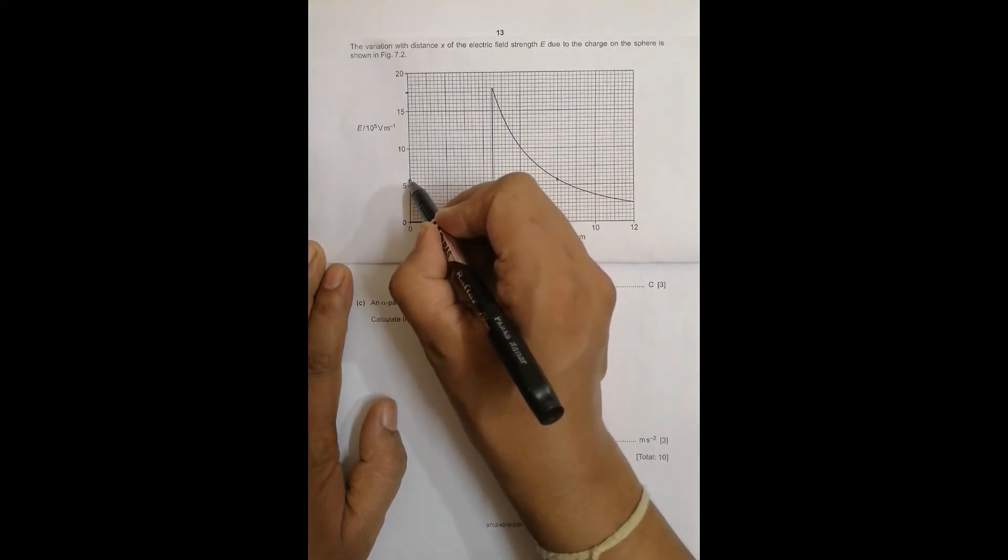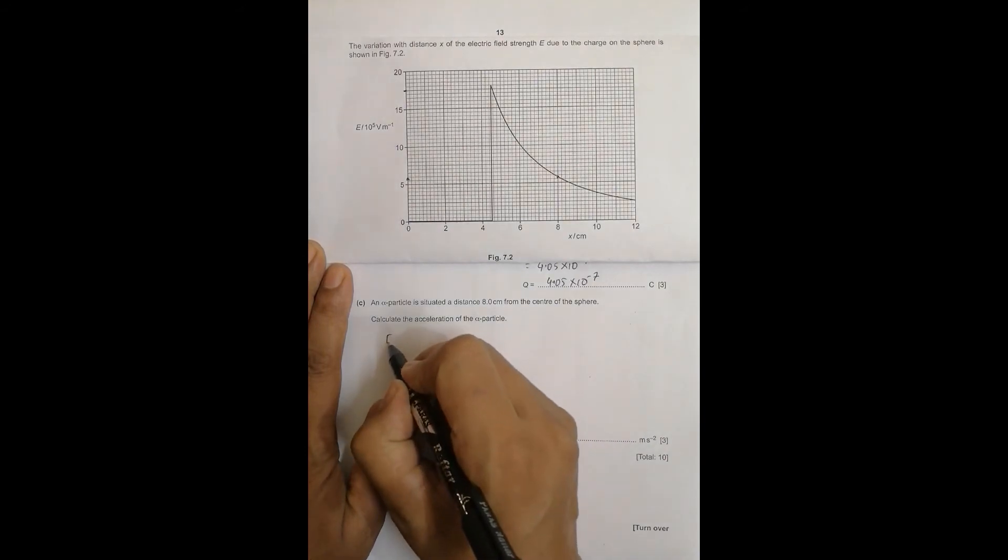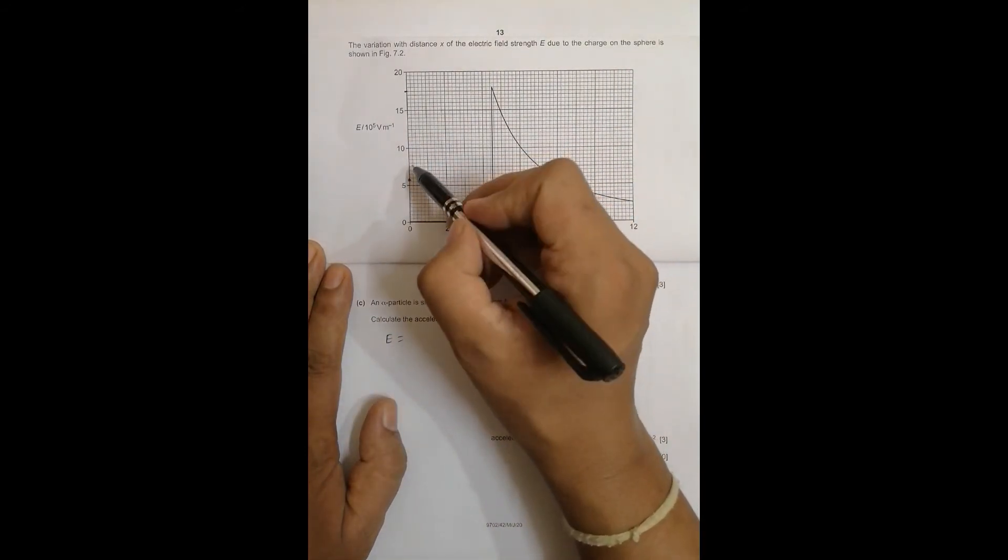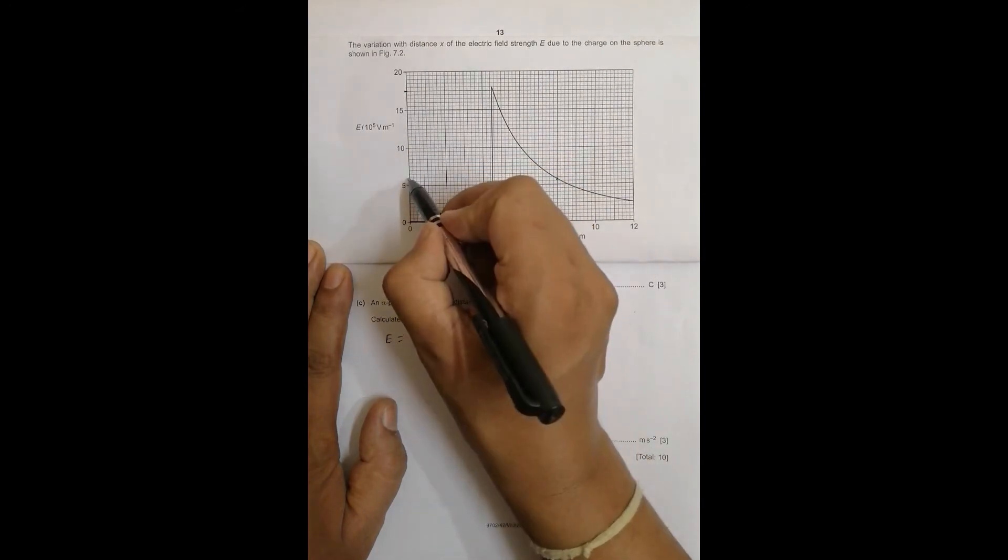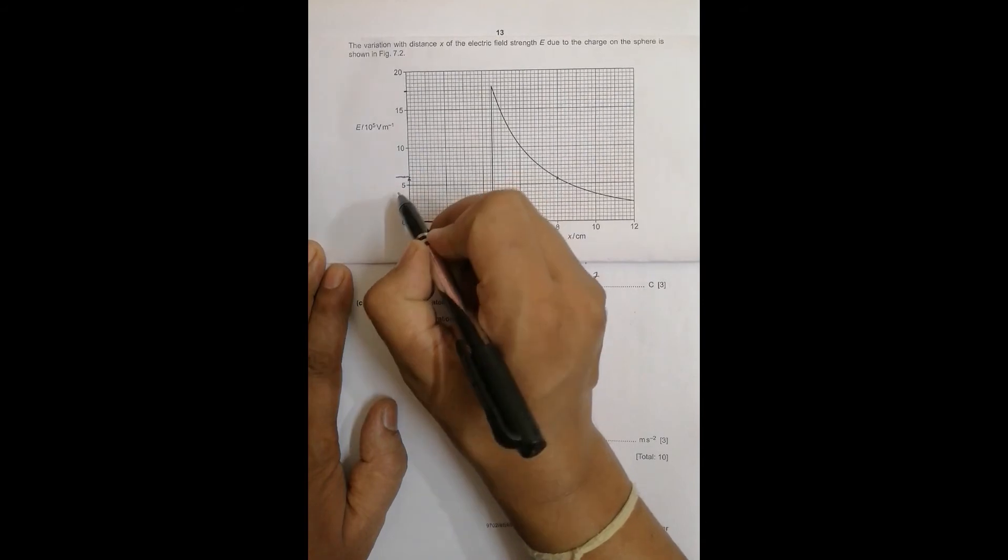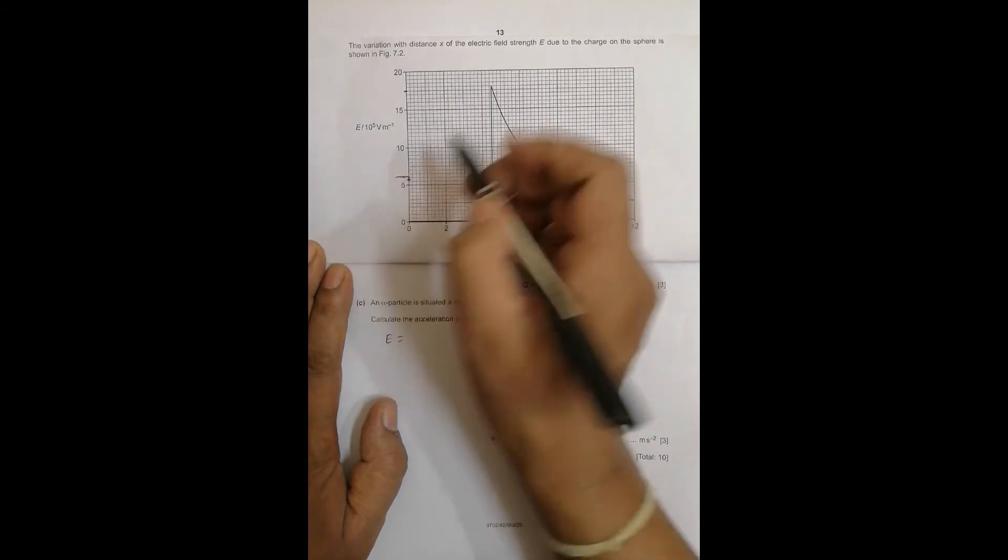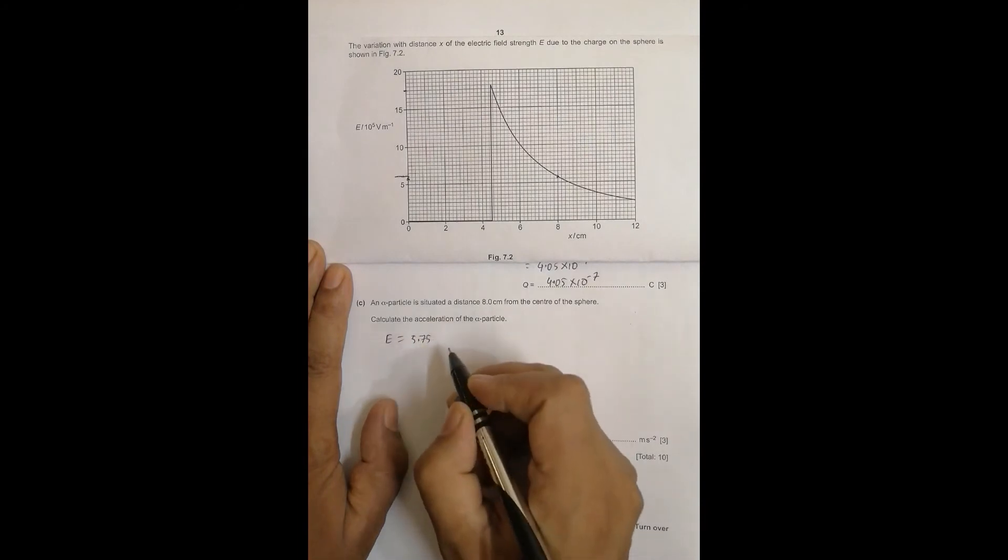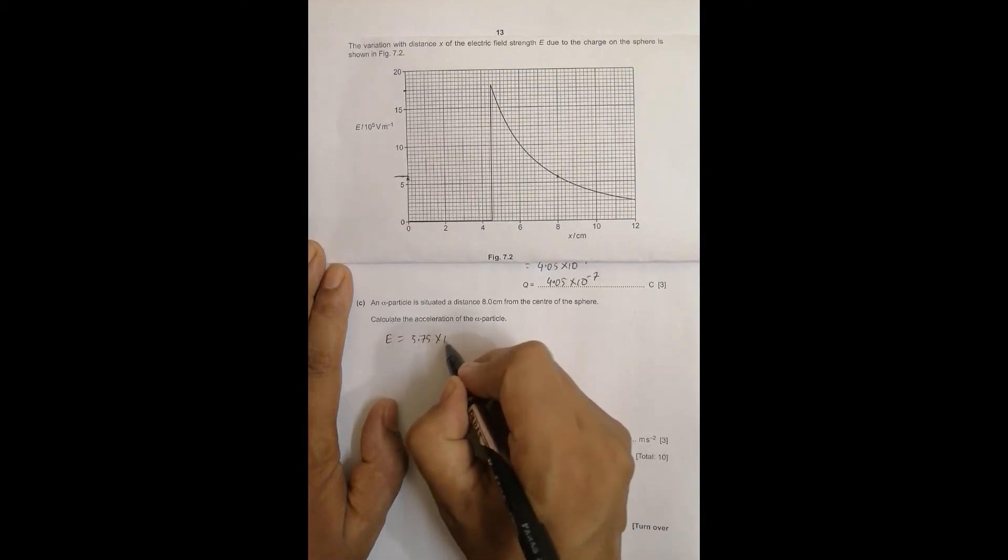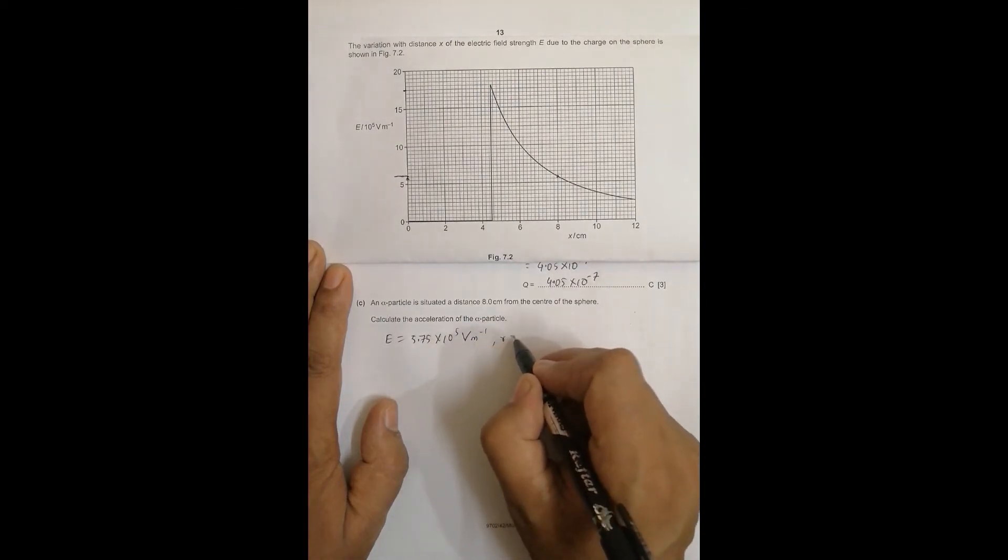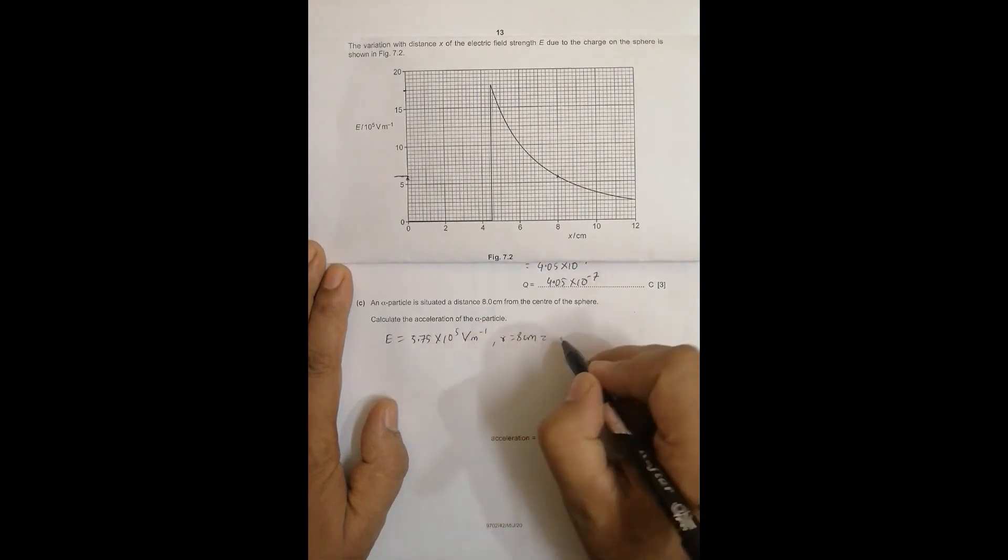E should be equal to, between 5.5 and 6, so it should be 5.75 into 10 to the power 5 volt per meter at that distance, at r equal to 8 centimeter which is 0.08 meters.